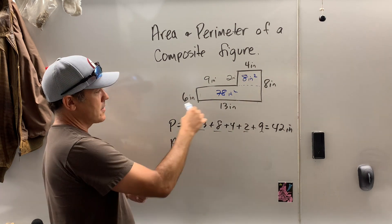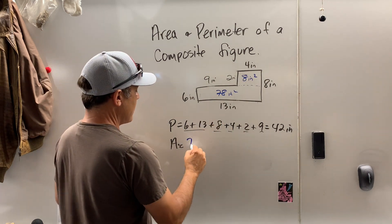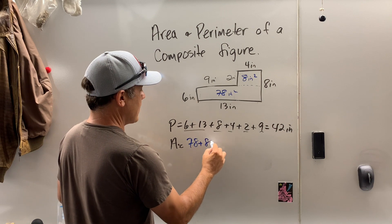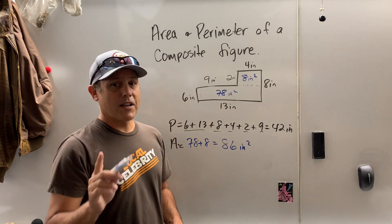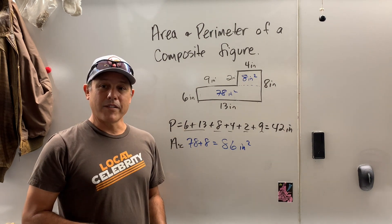78 inches squared. Now you can use a calculator, 6 times 13. So my area is 78 plus 8 is 86 inches squared. And that's how you find the area and perimeter of a composite figure.